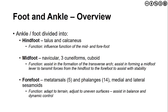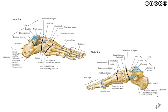Finally, we come to the forefoot. Here we have our five metatarsals, our 14 phalanges, as well as the medial and lateral sesamoids. The function here is really to adapt to uneven or variable terrain and to adjust to uneven surfaces. There is a good amount of mobility present within the forefoot, as well as stability that assists in balance and accommodating for dynamic proprioceptive neuromuscular control.